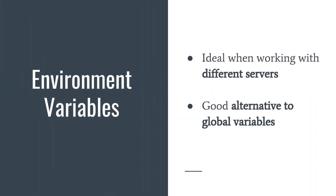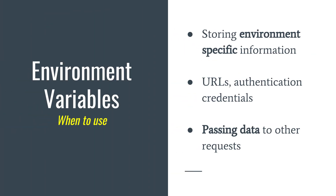Moving on to environment variables. Environment variables are tied to the selected environment and present a good alternative to global variables with a much narrower scope. They are ideal when your collection needs to run against different servers — for example localhost, a testing server, pre-production, or production — and you can easily switch environments to get the right address. They are also useful even with one server, as they keep variables away from the crowded global namespace.